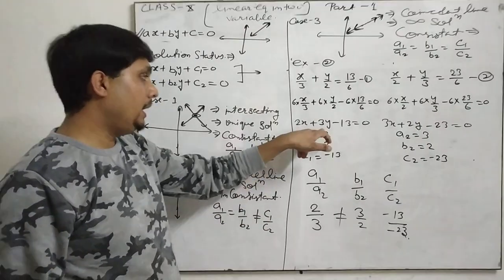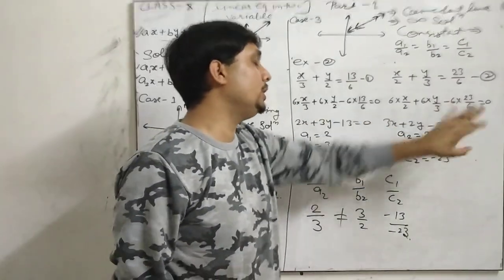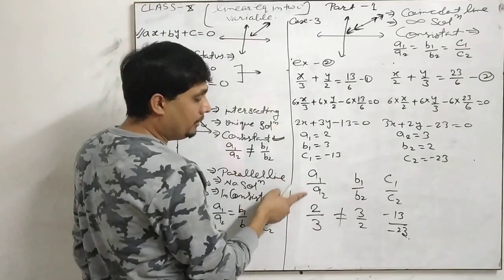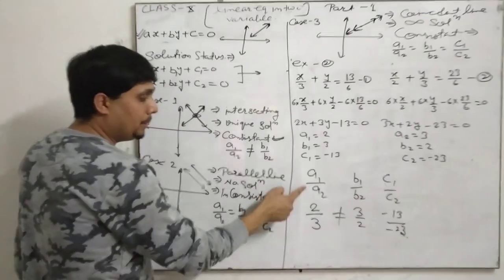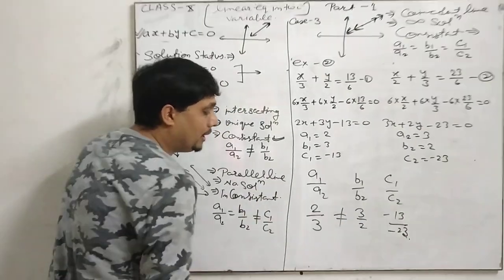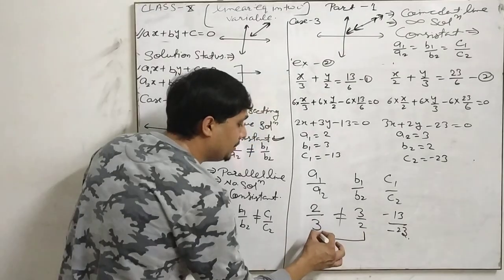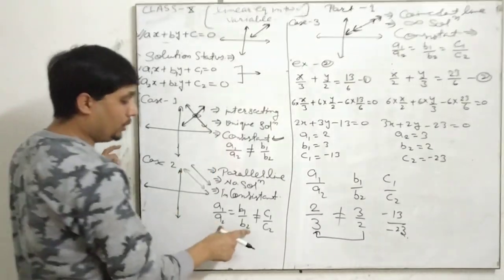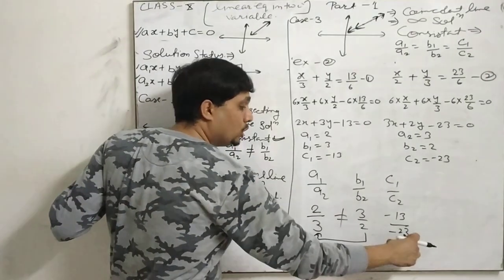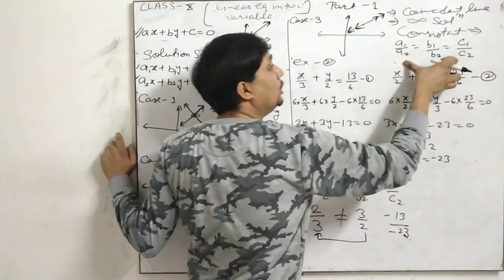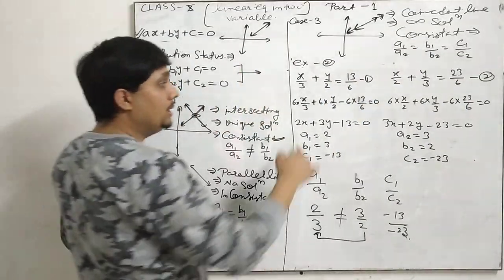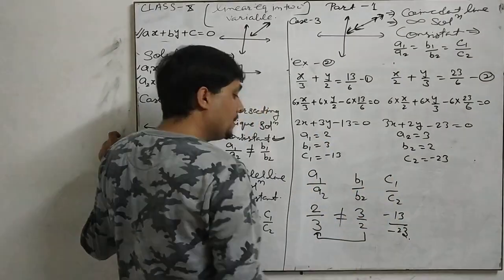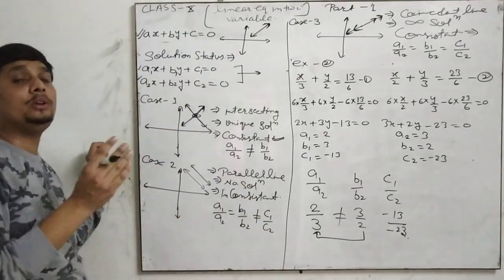After multiplying, we get 2x plus 3y minus 13 equals 0, and similarly a second equation equal to 0. We identify A1, B1, C1 for the first equation and A2, B2, C2 for the second. We then compute A1 upon A2, B1 upon B2, and C1 upon C2. If A1/A2 is not equal to B1/B2, it is case 1 — intersecting lines. If A1/A2 equals B1/B2 but not C1/C2, it is parallel lines — no solution. If all three ratios are equal, it is coincident lines — consistent. This way, we can directly check which case applies.